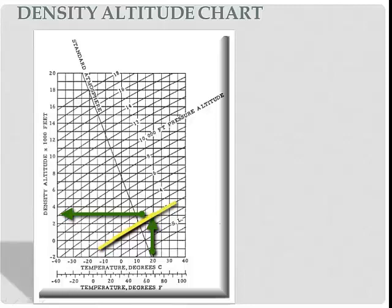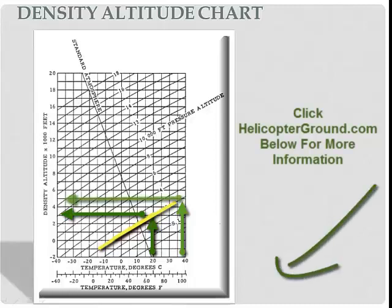So let's do another one with a higher temperature. Let's go 100 degrees Fahrenheit, which would be about 38 Celsius, and we'll start at the bottom at 38. Go up to 2,000 feet pressure altitude again and when we come across to the left, that's going to show us about 5,000 feet density altitude. What I'm showing you is as that temperature goes up, the density altitude goes up.